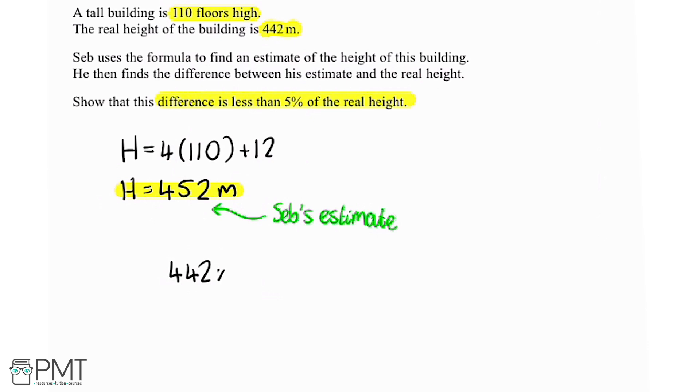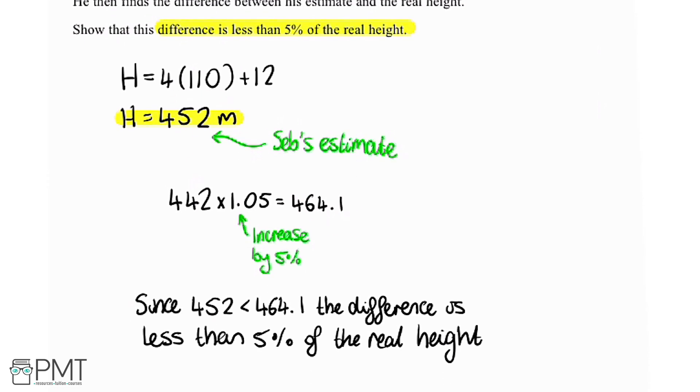So to increase by 5%, we multiply by 1.05, giving us 464.1. Now we can compare this number and this number. And since 452 is less than 464.1, the difference is less than 5% of the real height.